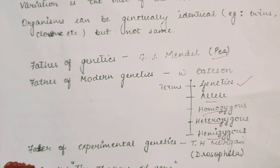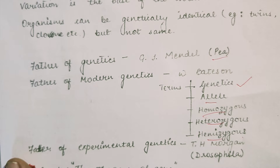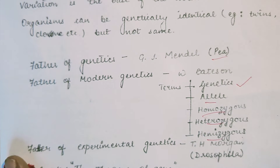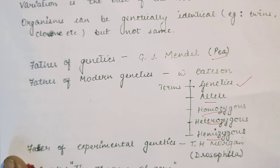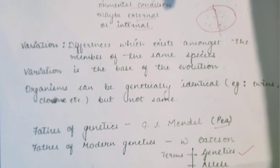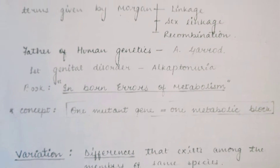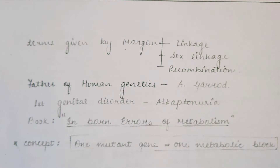The father of experimental genetics is T.H. Morgan. Morgan worked with Drosophila, and his book was 'Theory of the Gene', in which he mentioned all concepts and experiments from his research.